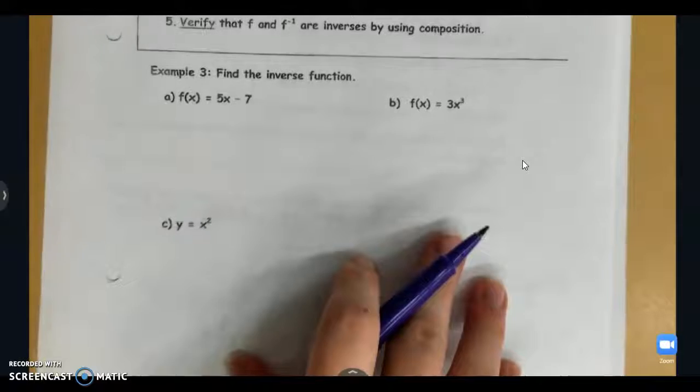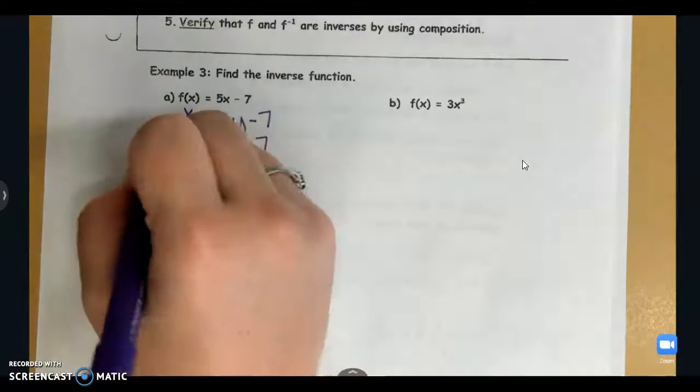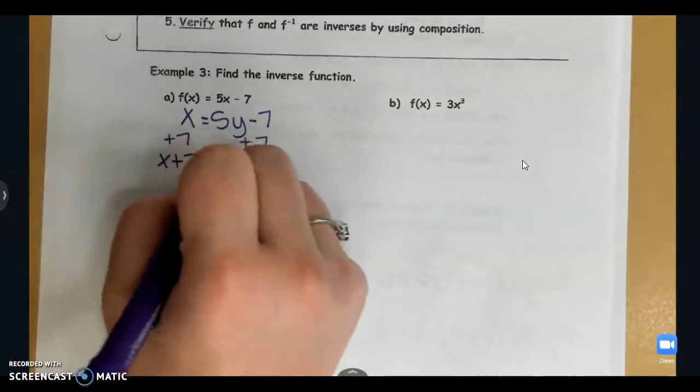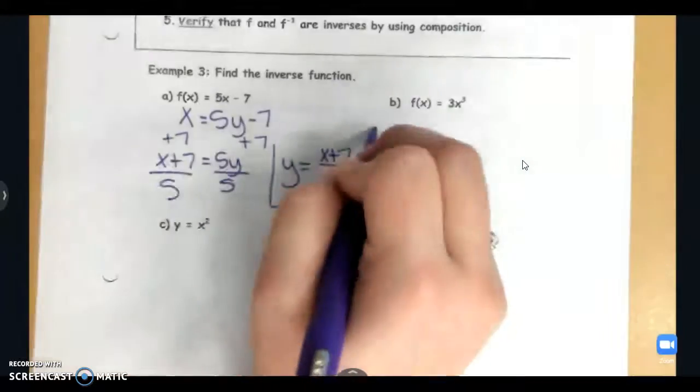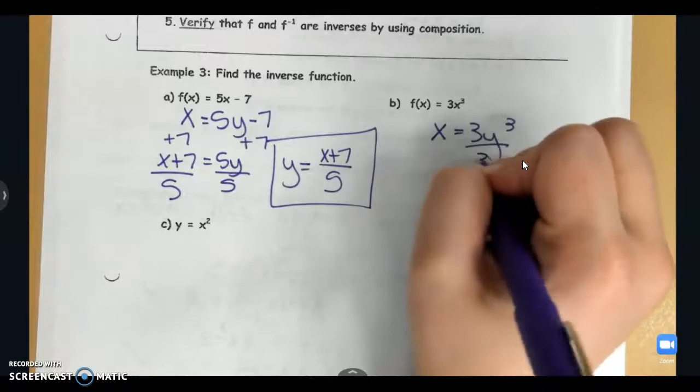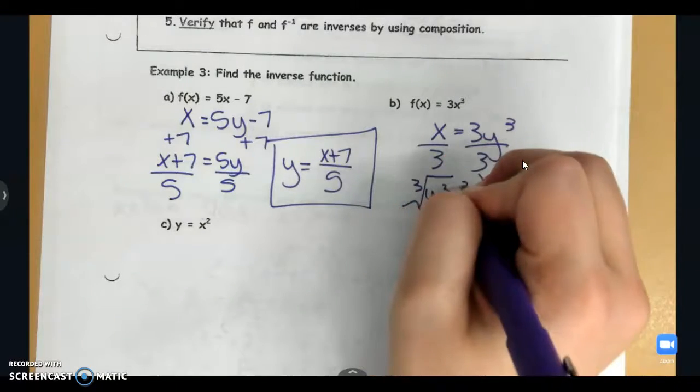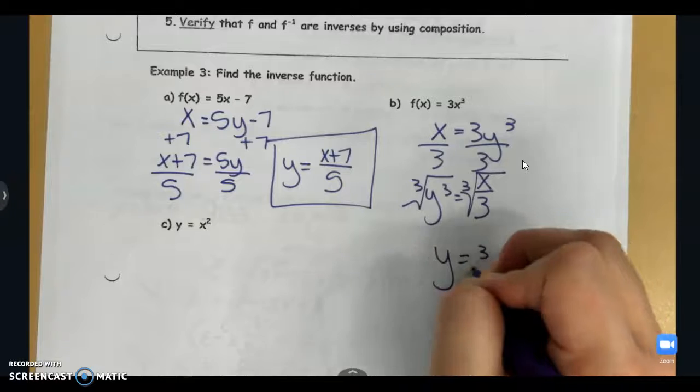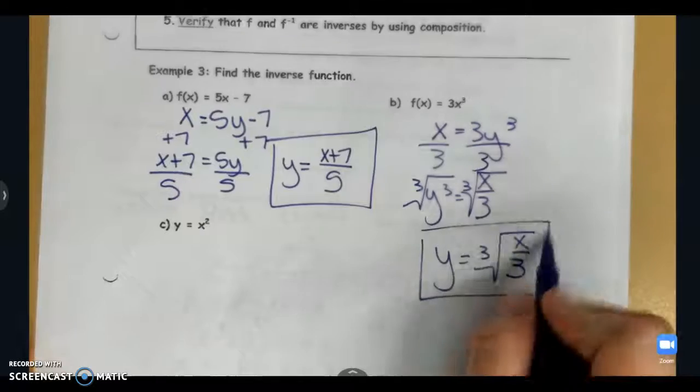Down here, it's just some more practice finding the inverses. So x equals 5y minus 7, x plus 7 equals 5y, and so y equals x plus 7 over 5 is my inverse. On part b, x equals 3y cubed, so I divide by 3 and then I take the cube root of both sides. And so we get the cube root of x over 3. And now both of those we could verify that we did this correctly by taking the composition both ways, and that would be how we verify that we found the inverse correctly.